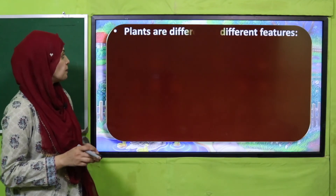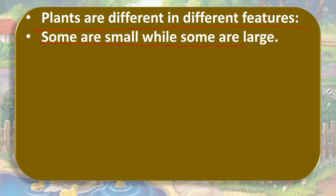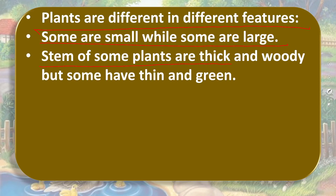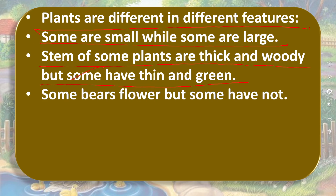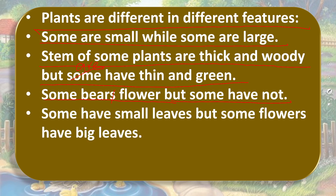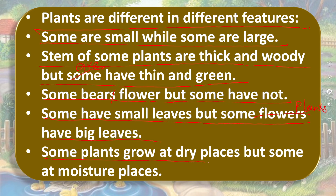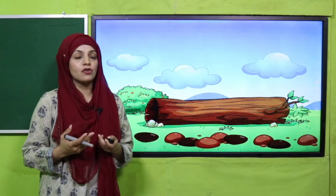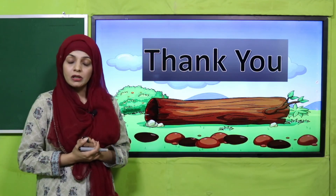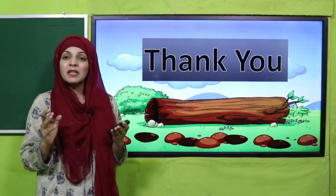Now for the wrap-up — today we have learnt that plants are different in different features. Some are small while some are large. Some plant stems are thick and woody while some are thin and green. Some bear flowers but some do not. Some have small leaves but some have big leaves. Some plants grow in dry places but some grow in moist places. This is how plants are different from each other. I hope you have enjoyed today's lecture and now know the differences between plants. Have a good day, thank you so much, Allah Hafiz.